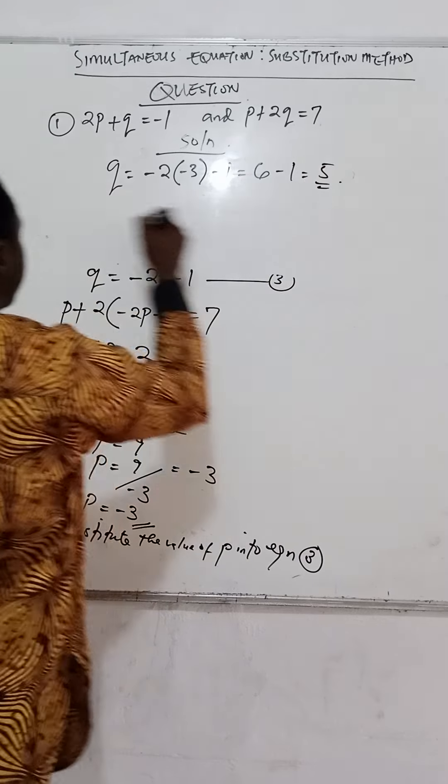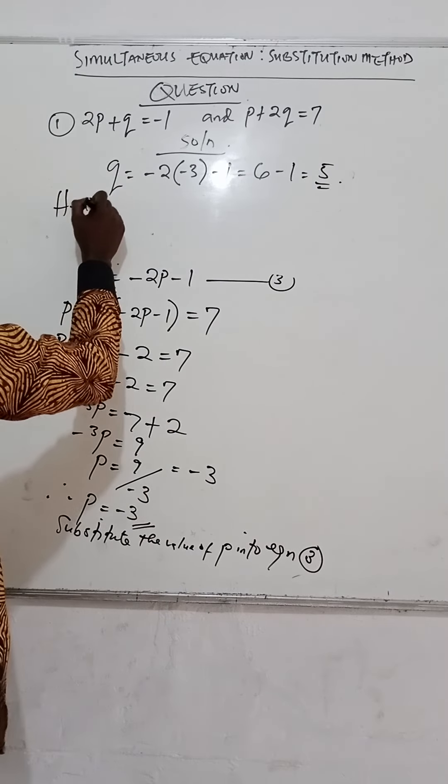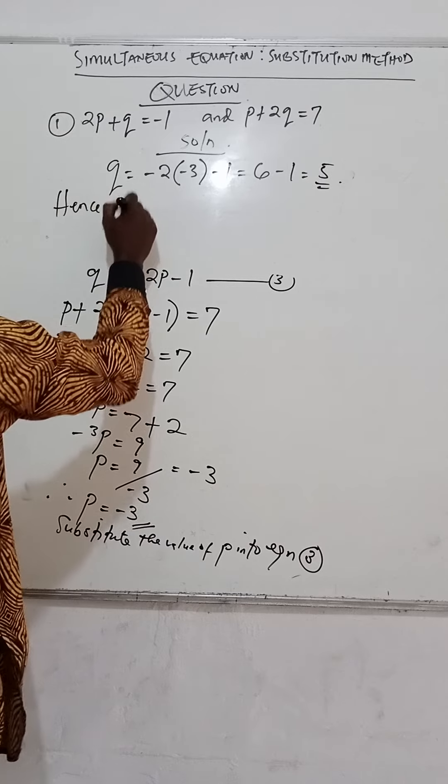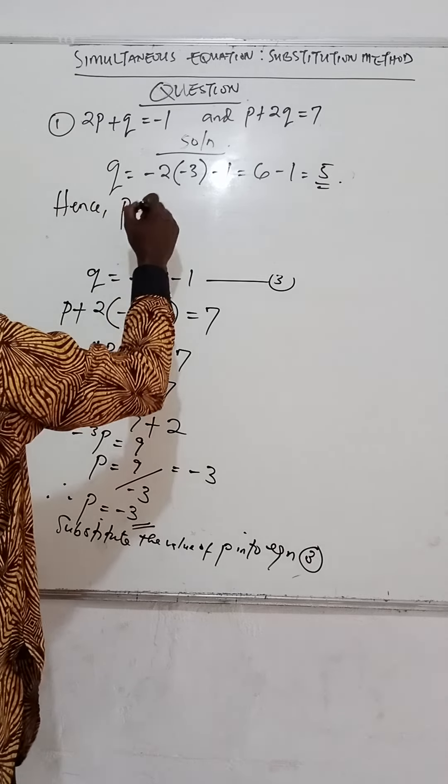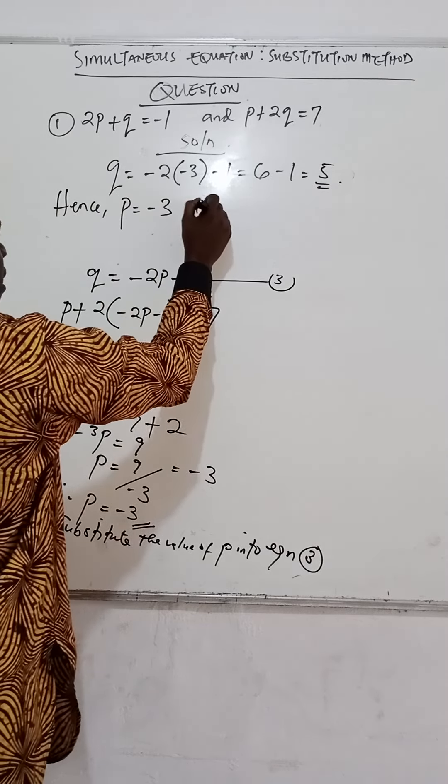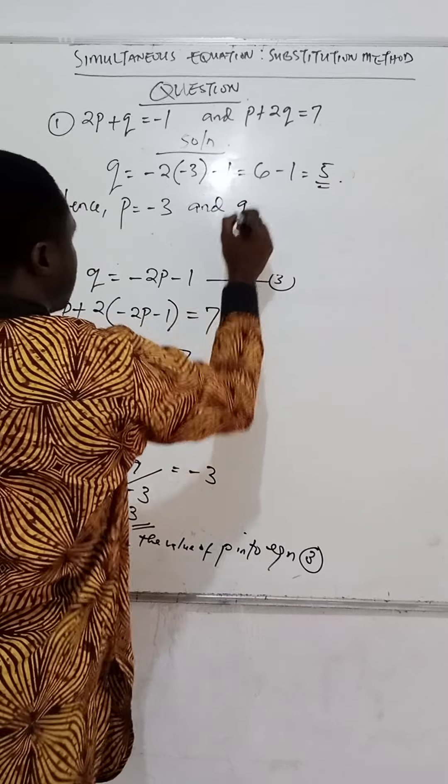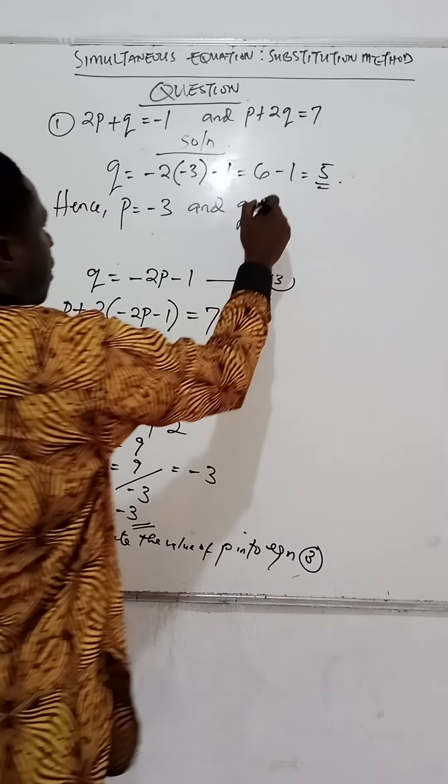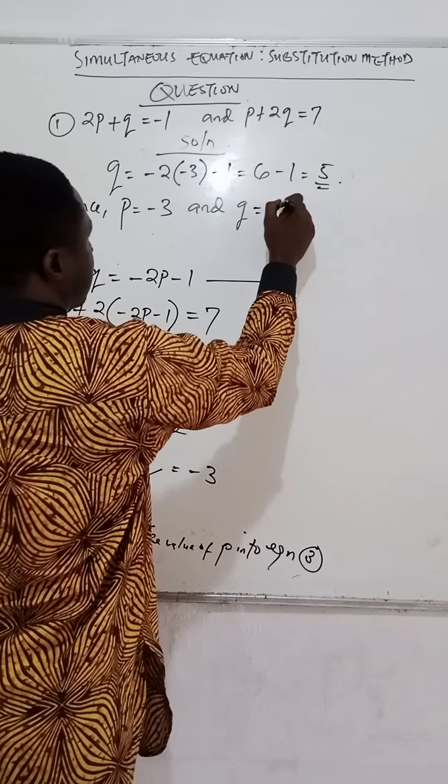We have q = -2(-3) - 1. This becomes 6 - 1, which is 5. Hence, the value of p = -3 and q = 5.